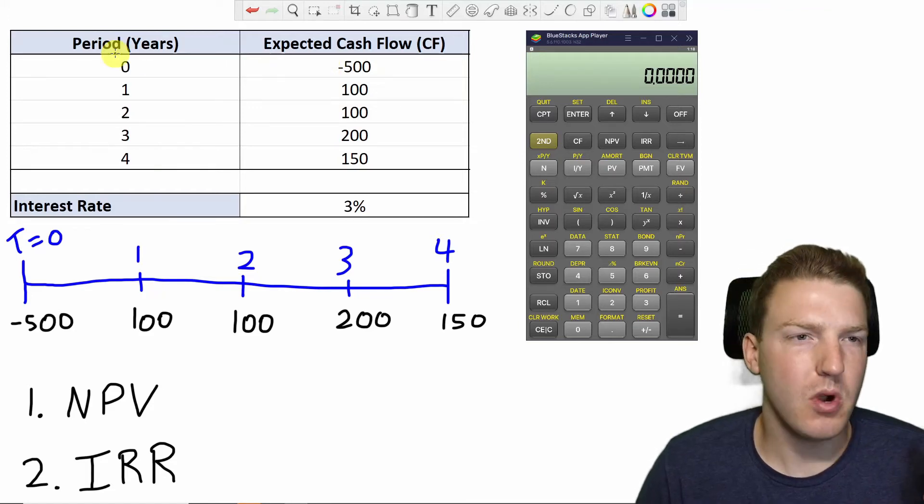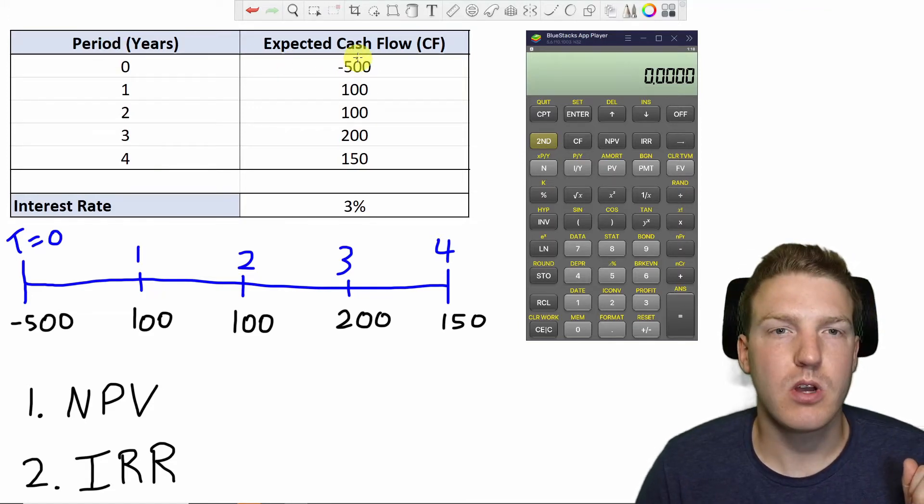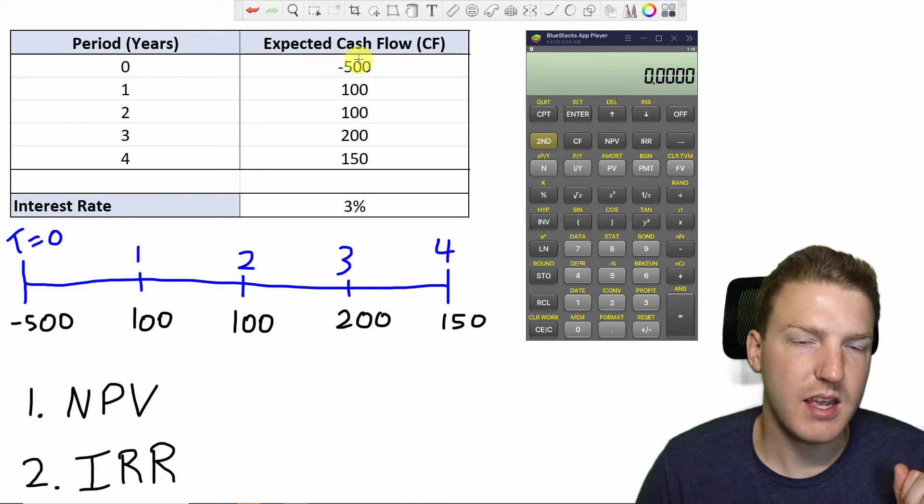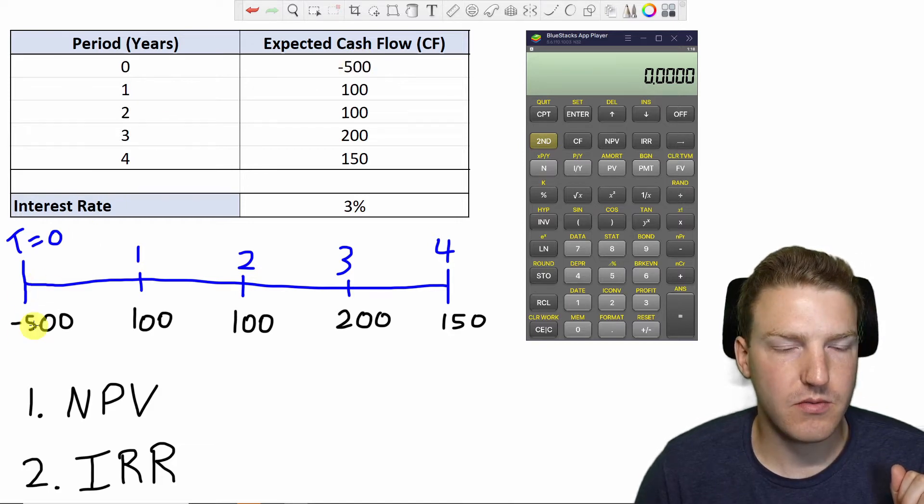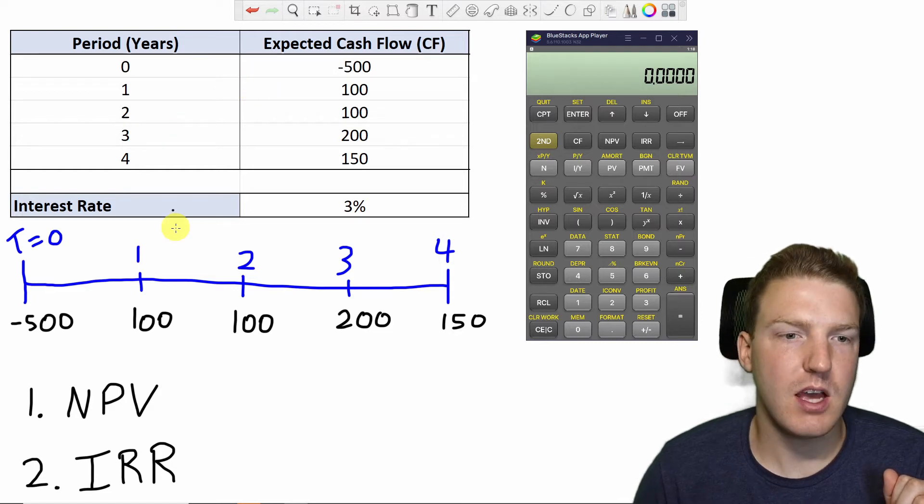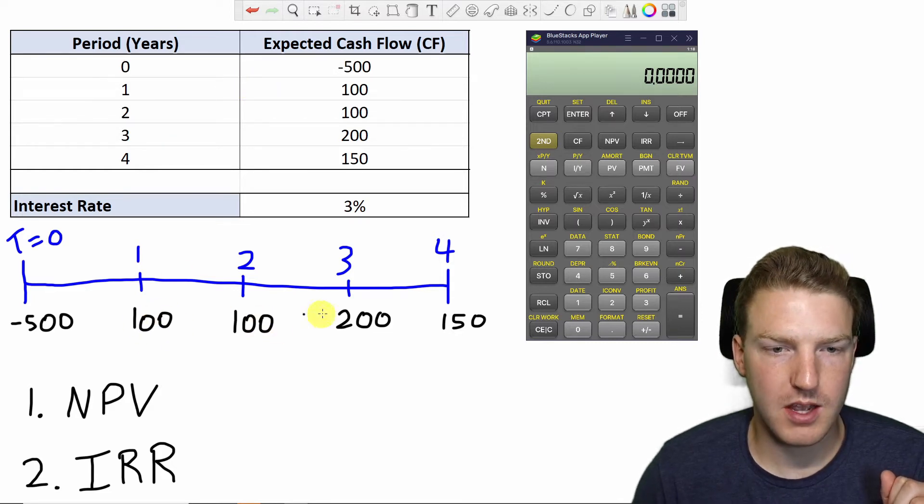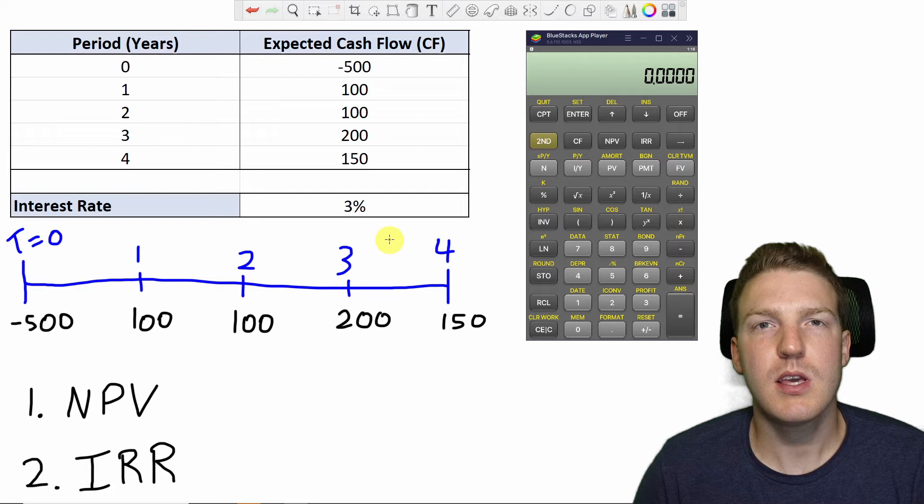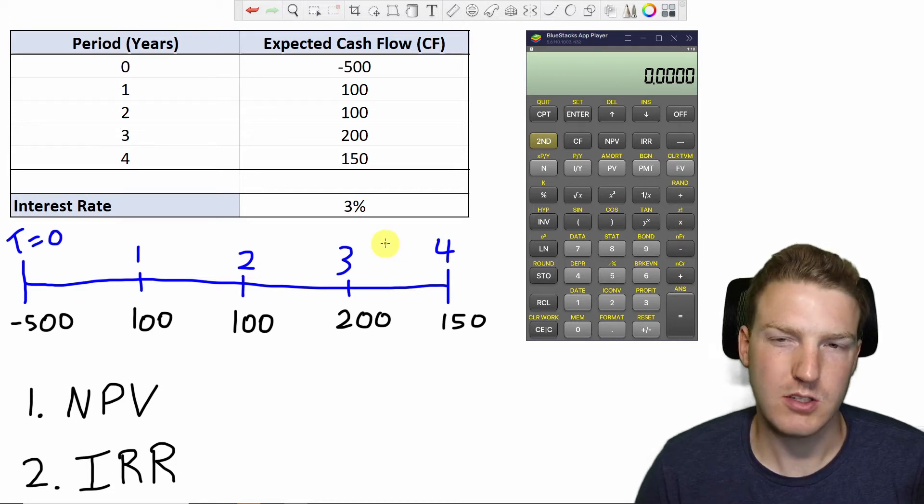Here we have a project that we would expect would cost us $500 today to invest in. So that's a negative $500 cash outflow. But then we expect it to have positive cash flows of these amounts for the next four years. How do we calculate the NPV for this project?